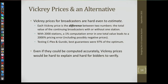Even if Vickrey prices could be calculated accurately, they'd be awfully hard to explain to bidders and for bidders to verify. If the government says 'I've decided your price is $10 million' and you ask where that number came from, you'd hear 'I ran Gurobi for weeks — I'm the government, trust me.' Explaining that calculation is really tough. So we decided we needed something different.